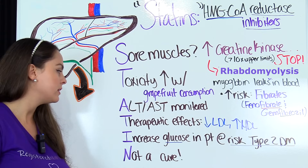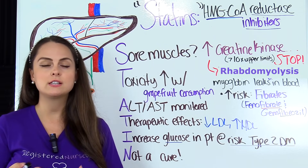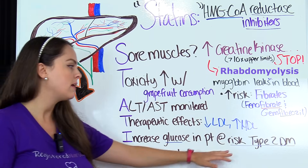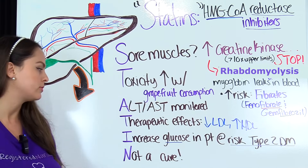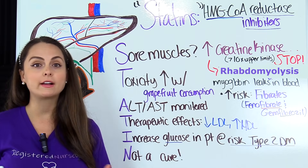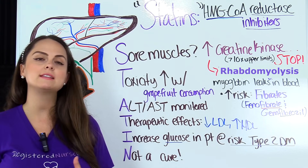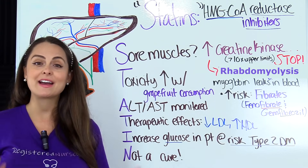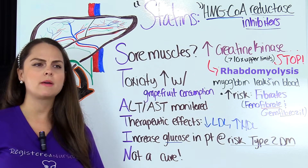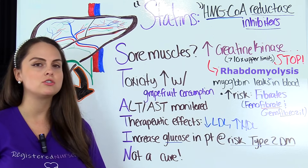I is for increased glucose in patients at risk for type 2 diabetes. You want to monitor blood sugar, teach the patient about that, and teach them signs and symptoms of hyperglycemia. If they have those risk factors for type 2 diabetes, statins could increase their glucose level. And lastly, N is for not a cure. Statin medications are not a cure for high cholesterol levels. Tell your patients it's very important they continue with exercise and a healthy diet. Patients sometimes think they can eat all the fried food they want and skip exercise because their cholesterol pill will take care of it — and that's not the case. Educate patients that this medication is not a cure.